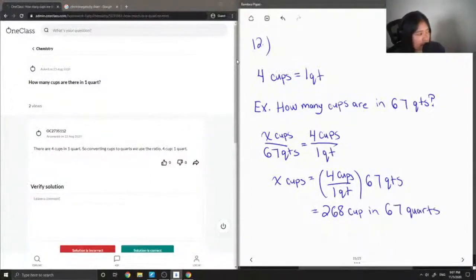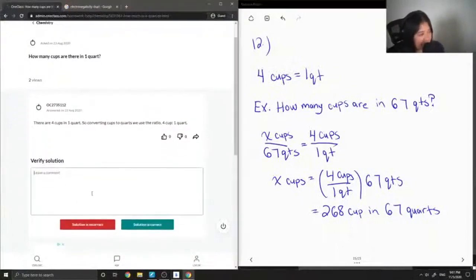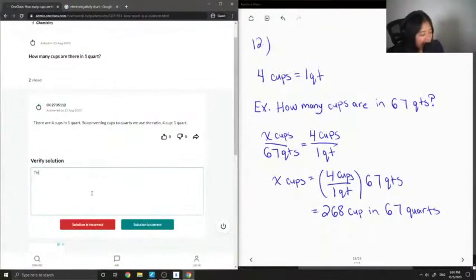Okay, so our junior tutor said there are four cups in one quart. So converting cups to quarts, we use the ratio four cups to one quart. Yep, pretty much. So this solution is correct.